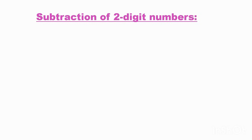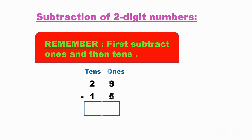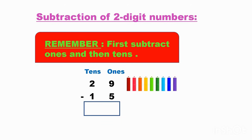Let us see subtraction of two-digit numbers. Remember: first subtract the ones, and then the tens. Twenty-nine minus fifteen. Here, first always subtract the digits in the ones place, then the tens. We have nine pencils — take out five from this. And here we have two tens, that means ten and ten. How many tens? Two tens.